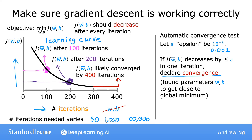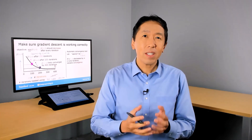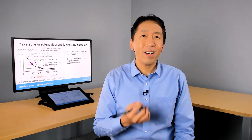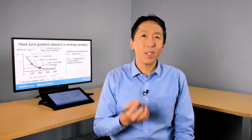Looking at this sort of figure can tell you, or give you some advance warning, if gradient descent is not working correctly as well. So you've now seen what the learning curve should look like when gradient descent is running well. Let's take these insights and in the next video, take a look at how to choose an appropriate learning rate.